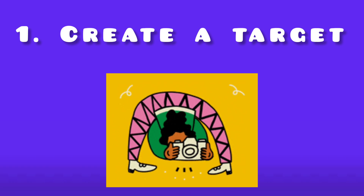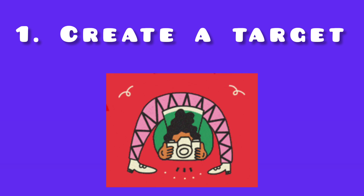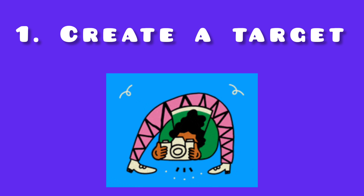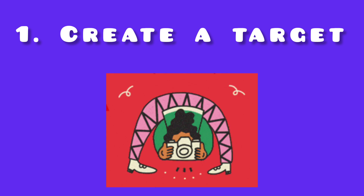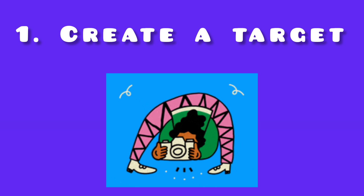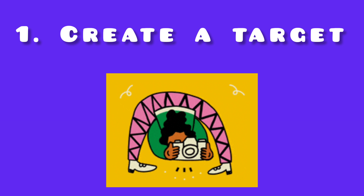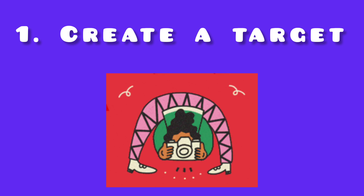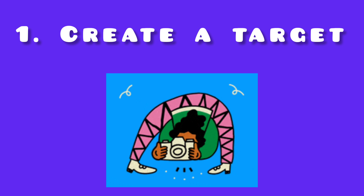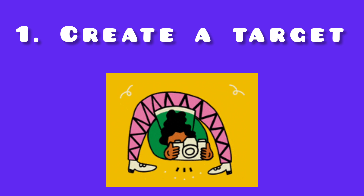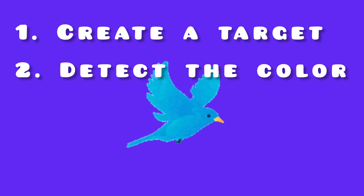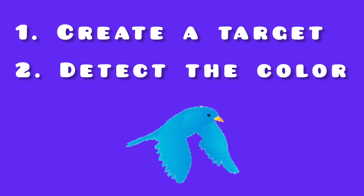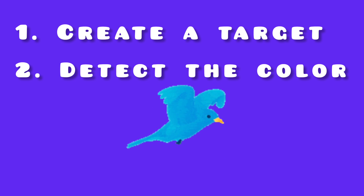First of all, you will have to create your target. You will have to decide what is your target — what is the point where, when the bird comes, you will detect it or your video camera will actually catch it. So decide your target. Then detect the colors.